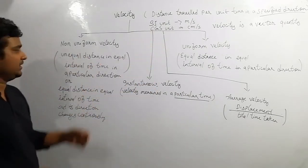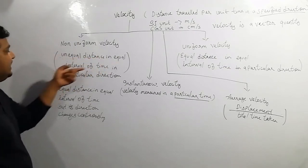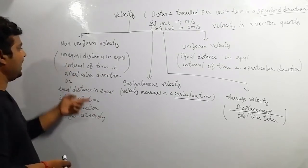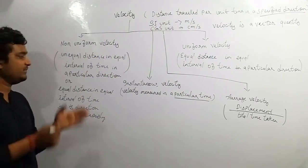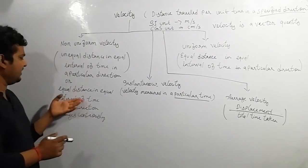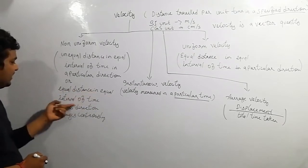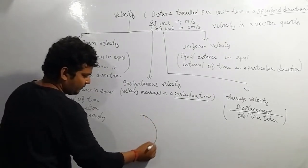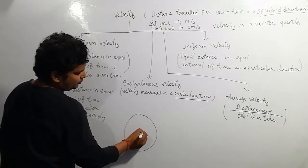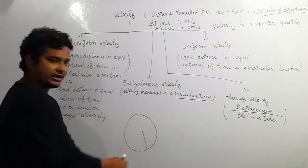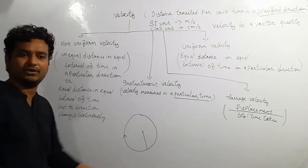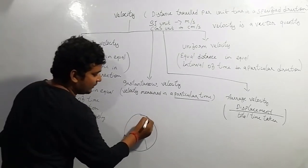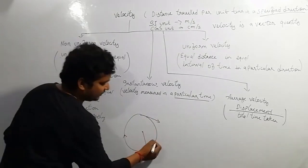Non-uniform velocity means a body travels unequal distance in equal intervals of time in a particular direction. Another definition: equal distance in equal interval of time but direction is continuously changing. For example, consider a stone tied with a string and rotating in a circular path — the stone changes its direction at every instant. The direction at any point is the tangent at that instant. That is non-uniform velocity.